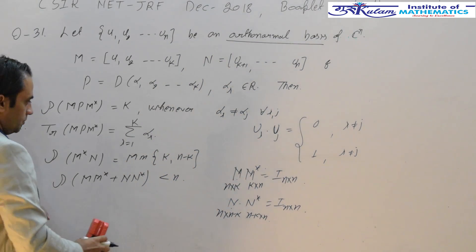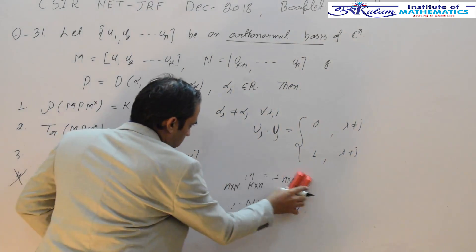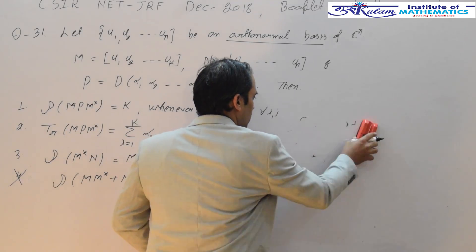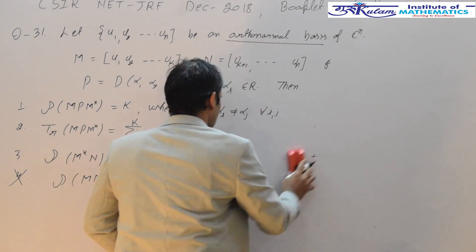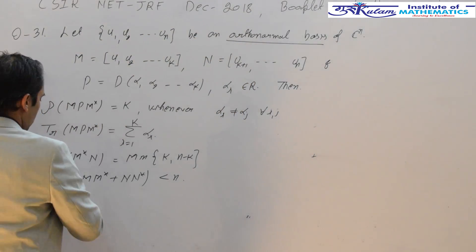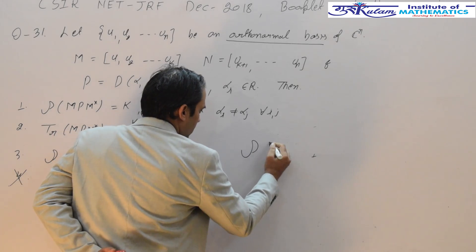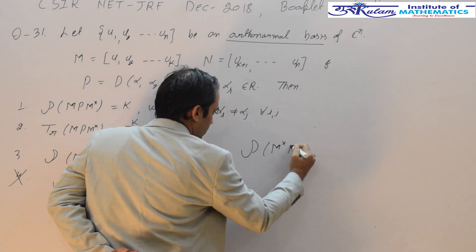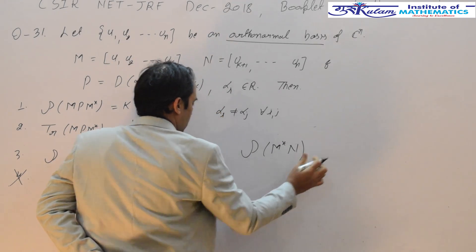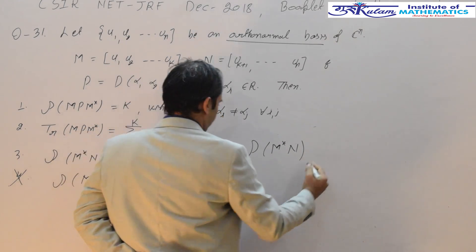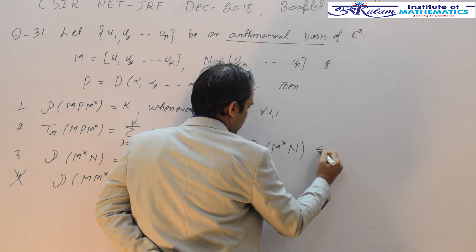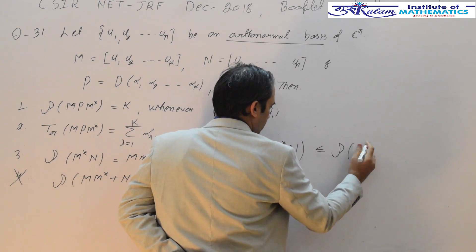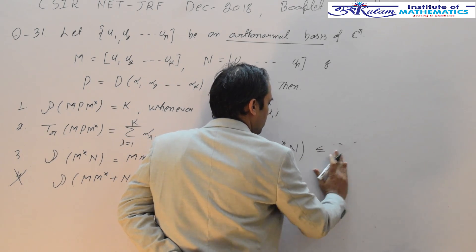Now consider the third option. We already know that the rank of M-star times M is less than or equal to the minimum of the ranks involved.